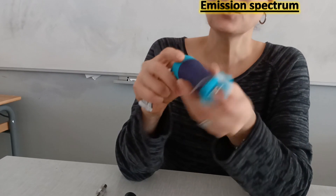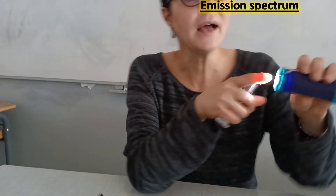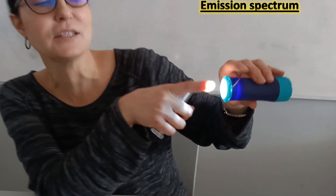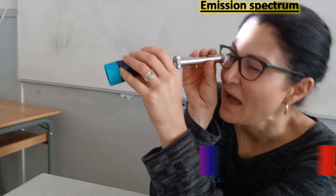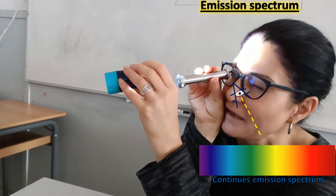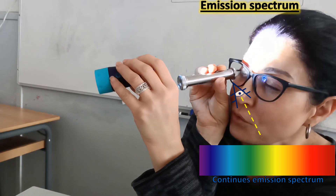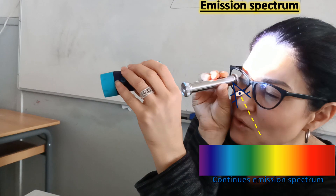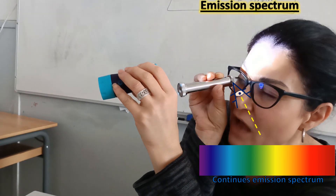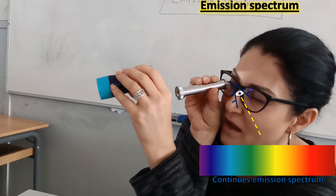Now I want to observe the emission spectrum of white light. This is a flashlight — it emits white light. What do we observe when we let the light coming from the flashlight pass through the slit of the spectroscope? We observe a continuous band of colors without dark lines.